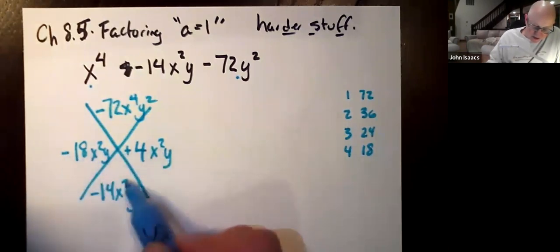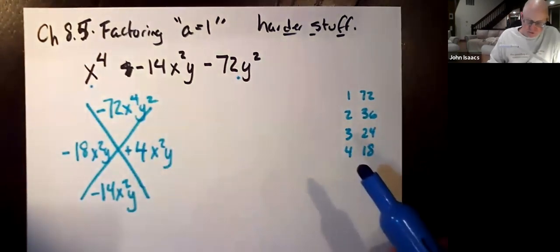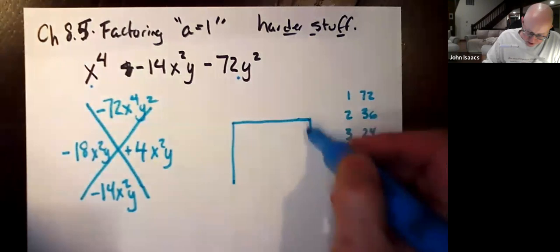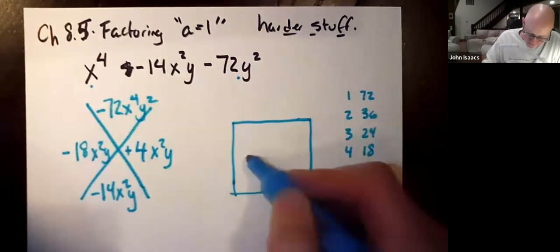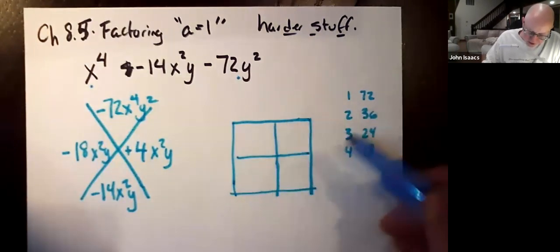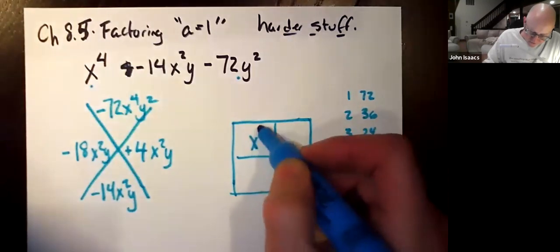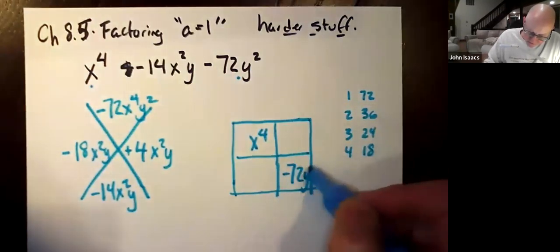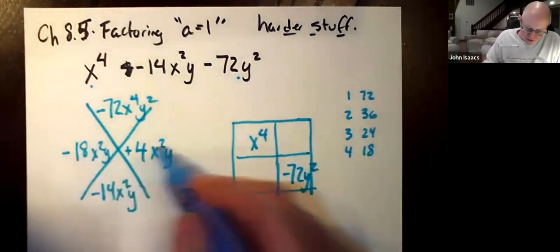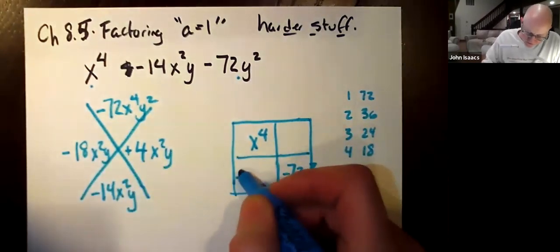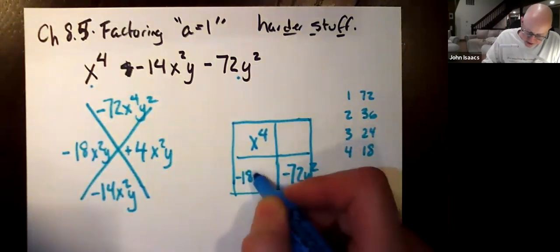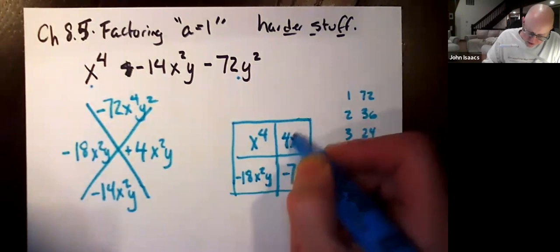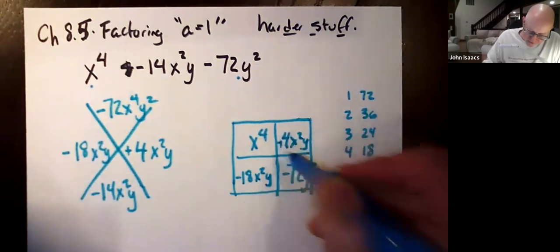These two terms add to this and multiply to this. Perfect. Now we're going to take the box. And in the box goes the first term and the last term. And these two terms get these two things. Negative 18 x squared y and 4 x squared y. This is positive.